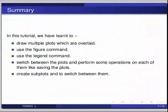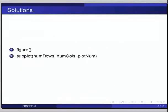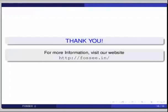Here are some self-assessment questions for you to solve. The first one: what command is used to get individual plots separately? The second one: which of the following is correct? Option 1: subplot(num_rows, num_columns, plot_num). Option 2: subplot(num_rows, num_columns). Option 3: subplot(num_columns, num_rows). The answer to the first question is: the figure function can get us the individual plots separately. The answer to the second question: the subplot command takes three arguments — the number of rows, followed by the number of columns, and the plot number. Hence the first option is correct: subplot(num_rows, num_columns, plot_num). We hope you have enjoyed this tutorial and found it useful. Thank you.